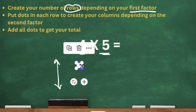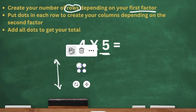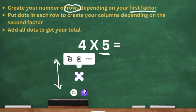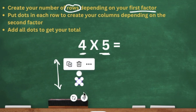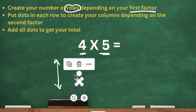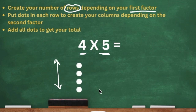So I'm placing my dots one, two, three, and four — making sure they are lined up. That's very important. We have four rows going up and down. That's how we create our rows.